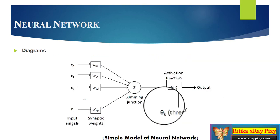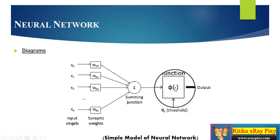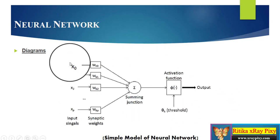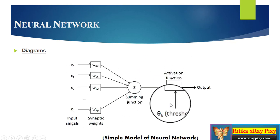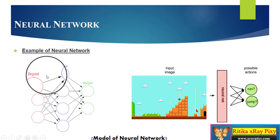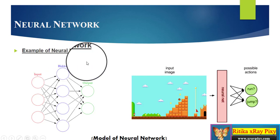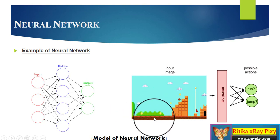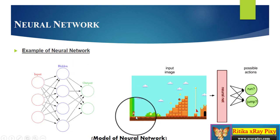This is the simple model of the neural network. This is the input layer, this is the hidden layer, and this is the output layer. In the input layer we give the input, then we process that input in the hidden layer, then using the output layer we show the result. We use an example of the Mario game to show how a neural network works.